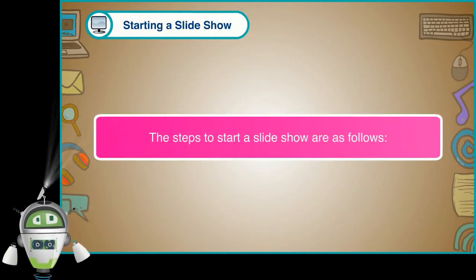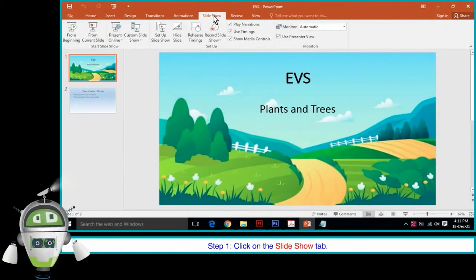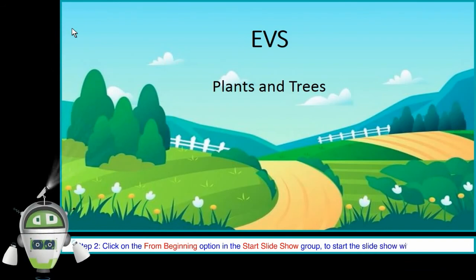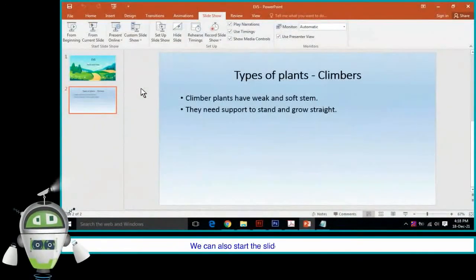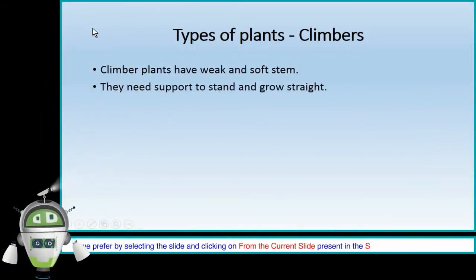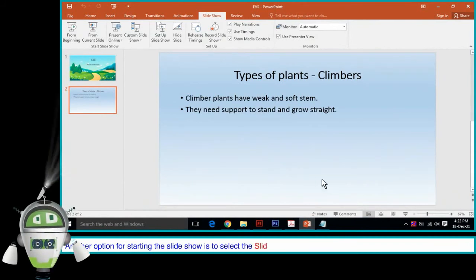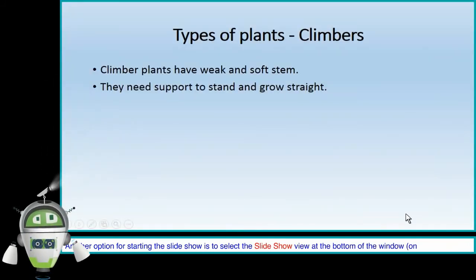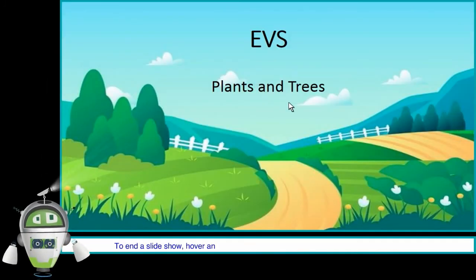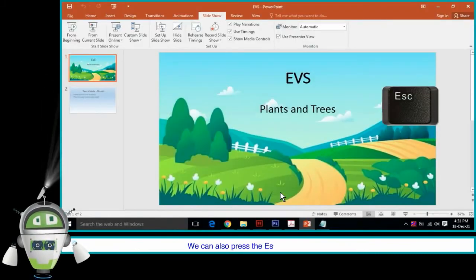Starting a Slideshow — Step 1: Click on the Slideshow tab. Step 2: Click on the From Beginning option in the Start Slideshow group to start with the first slide. We can also start from a preferred slide by selecting it and clicking on From Current Slide in the Start Slideshow group, or by selecting the Slideshow view at the bottom status bar. To stop or end a slideshow, hover and select the menu box options and click on End Show, or press the ESC key to end the show.